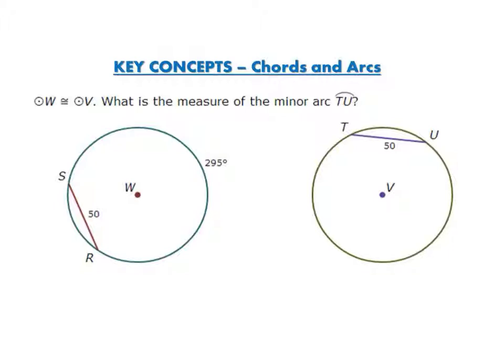Well, the minor arc is going to be the same as minor arc SR. So I look at this major arc, which is 295 degrees. A circle completely around is 360 degrees, so I just need to find the difference between 295 and 360. I'm going to take 360 minus 295, and that gives me 65. So the measure of minor arc TU is 65 degrees.